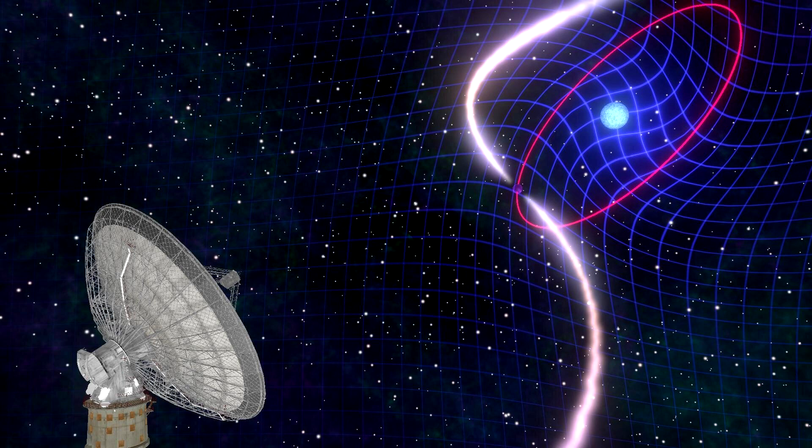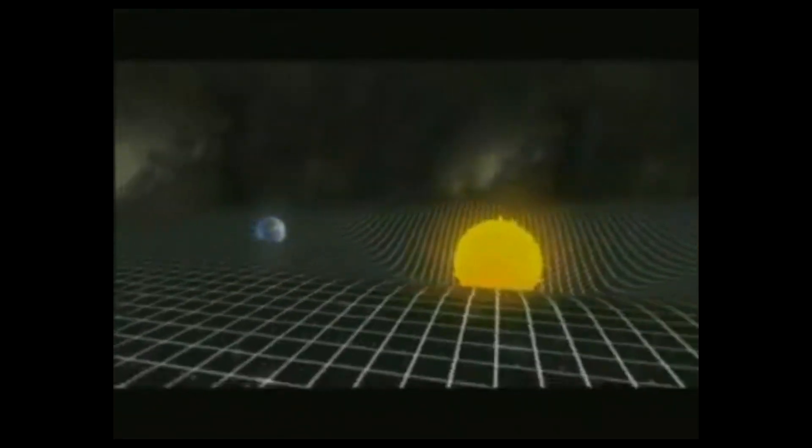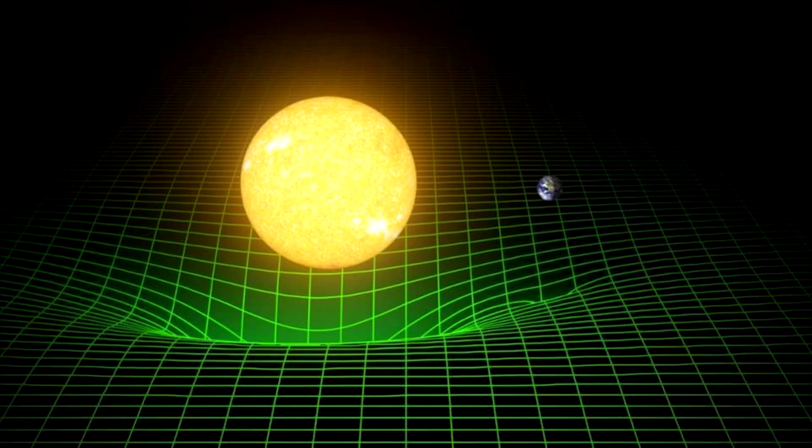Einstein went on to explain gravity as a consequence of the way the fabric of space-time is set up in the presence of masses, as opposed to an always-present force between masses like Newton had proposed before. Objects were following the closest thing to a straight path called a geodesic, in a curved space-time fabric that is a consequence of the masses. Mass tells space how to curve, curved space tells masses how to move. The sun creates a warped space-time around it and planets are simply falling into that space that is curved by the mass of the sun. This is how gravity worked.